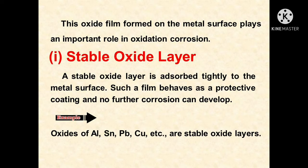Stable oxide layers: a stable oxide layer is adsorbed tightly to the metal surface. Such a film behaves as a protective coating and no further corrosion can develop. Examples of stable oxide layers include oxides of aluminium, tin, lead, and copper.